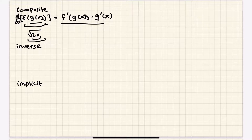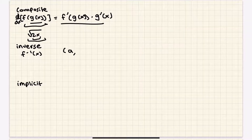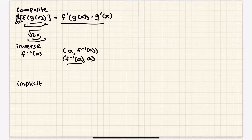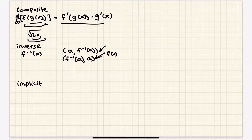Next is inverse functions. The inverse function f inverse of x is basically a function that undoes the original function. You can have a point with a as the input to this inverse function, and your output would be f inverse of a. But if you're talking about the original function, the point is actually going to be f inverse of a as the input and a as the output. Remember, the domain and range are switched when you're converting between these formats.